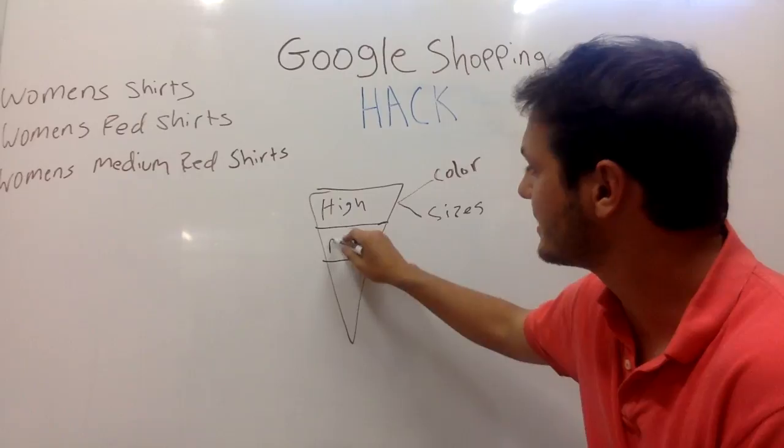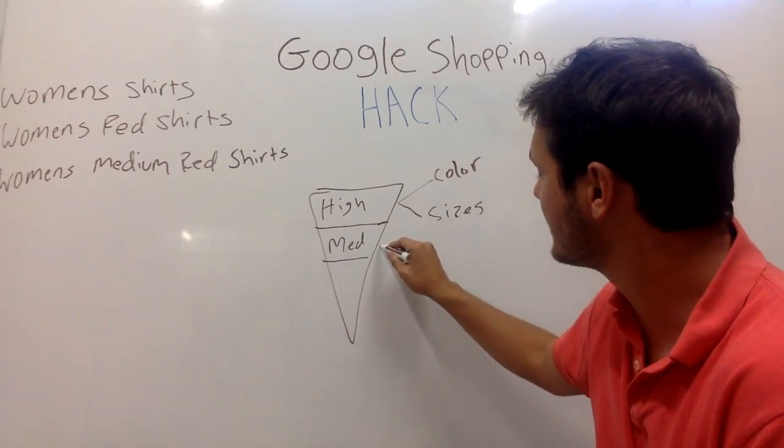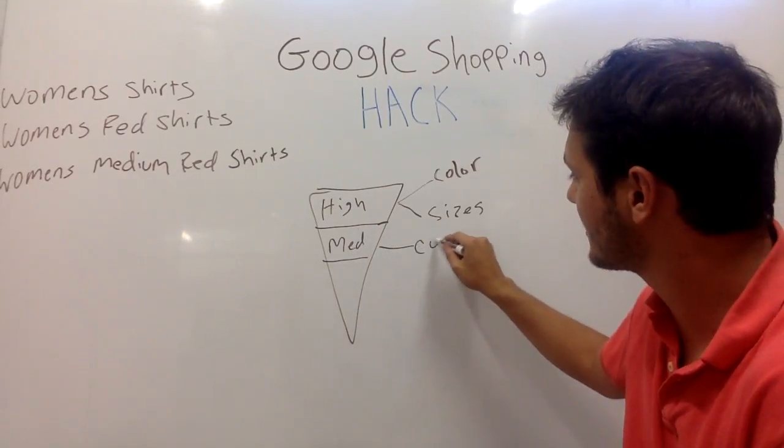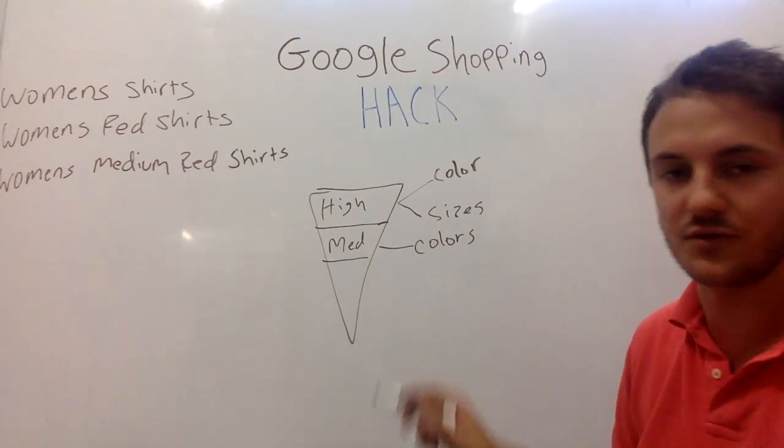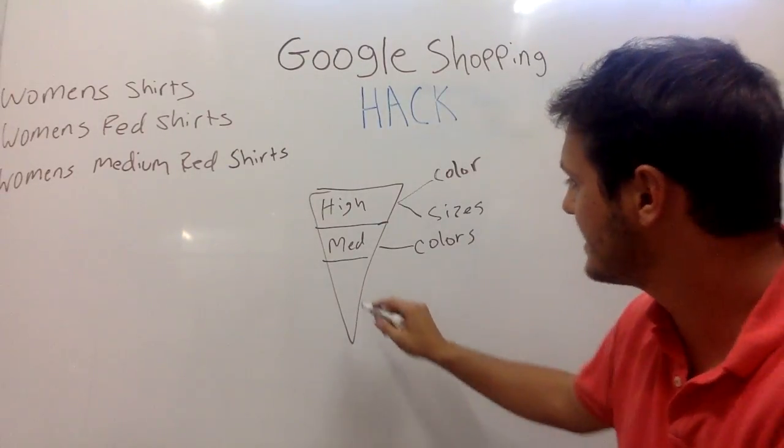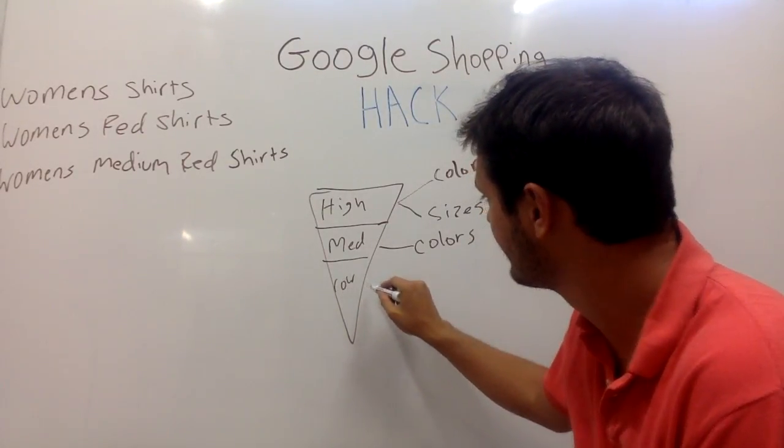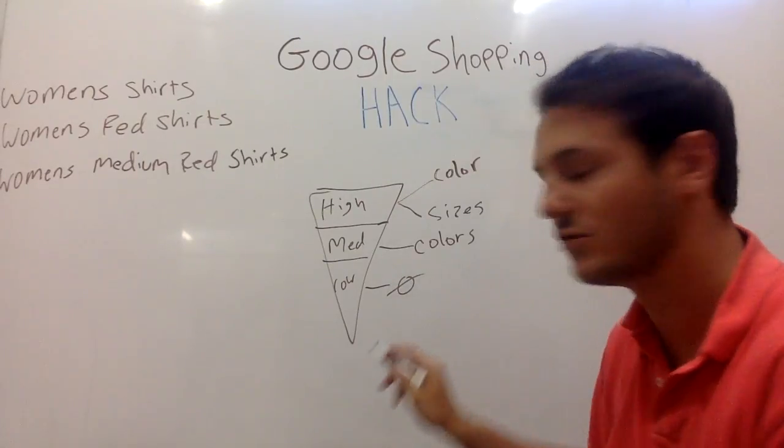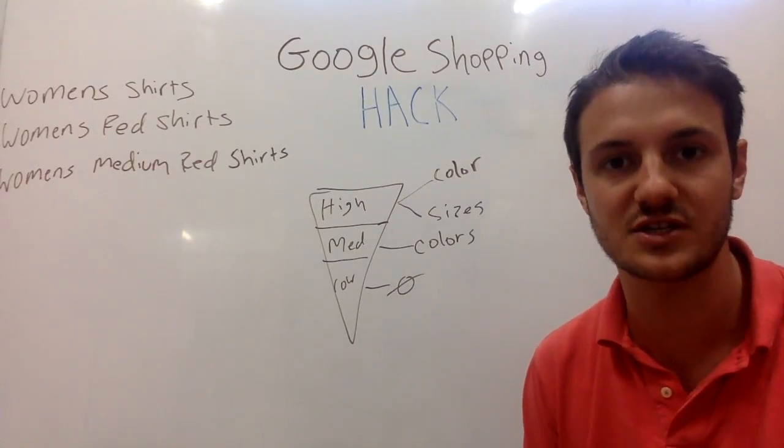Then you'd want to have a medium priority campaign. In the medium priority campaign you'd want to just have the colors of your shirts eliminated. Then in a low priority campaign you'd want to have no negative keyword lists applied to that.